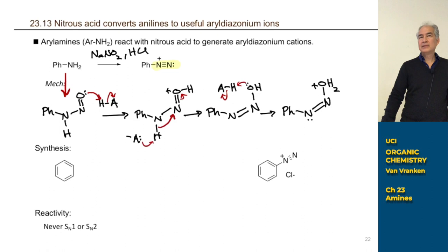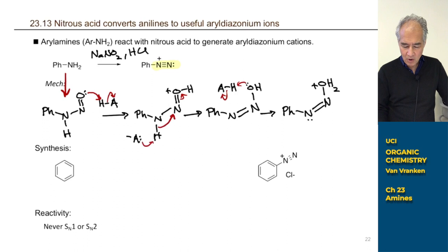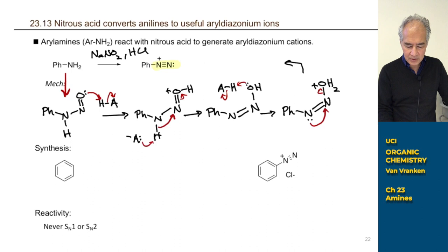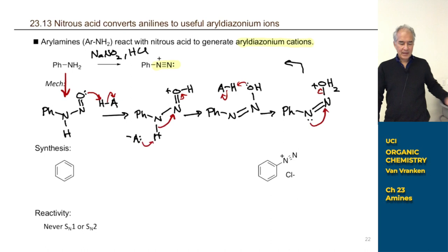Water is a leaving group. Oxygen does not like that positive charge. And now we're going to push out the water leaving group. We've got a lone pair on that nitrogen atom — three bonds to nitrogen, it's neutral, needs to have a lone pair. So we'll just push out that water molecule right from the backside. And that's what leads to this arene diazonium functional group, or aryl diazonium functional group.